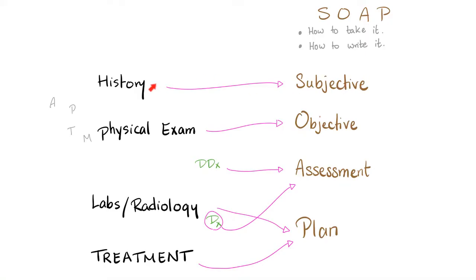Subjective is the history, and you need to leave this in the patient's own words. Do not say hypertension — the patient will say high blood pressure. Do not say diabetes mellitus — the patient will say I have high blood sugar. Do not say hypercholesterolemia — say high cholesterol. Do not say hematemesis — say vomiting blood. Do not say hemoptysis — say the patient is complaining of coughing up blood. Instead of saying dyspepsia, leave it as indigestion.